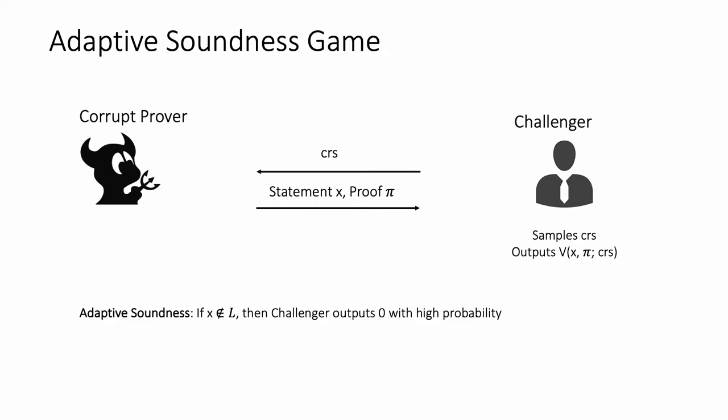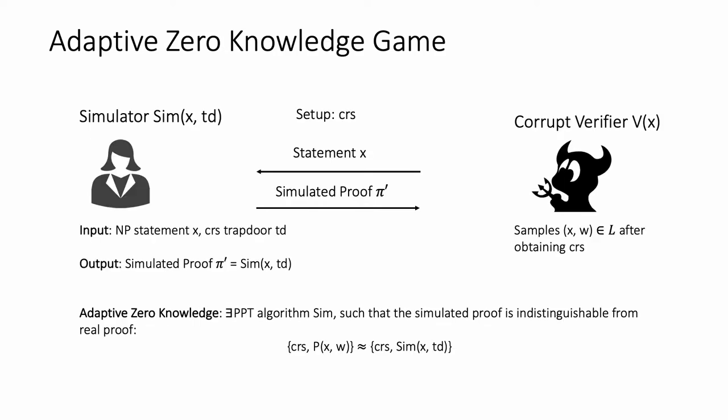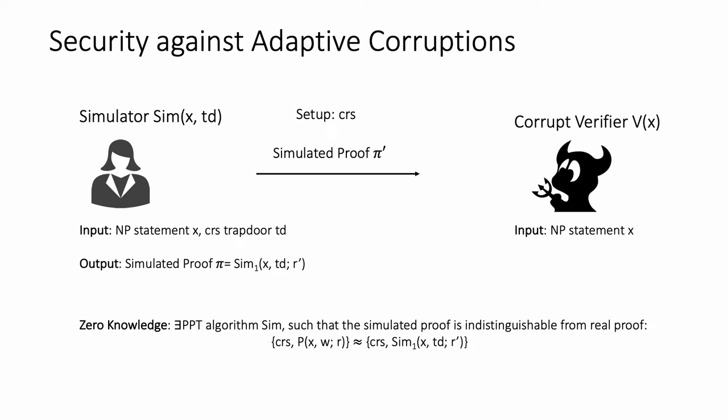That is, a prover cannot break soundness even if the statement is adaptively chosen based on the CRS distribution. We extend the same argument for the zero-knowledge game. Here, a simulator interacts with the corrupt verifier. The corrupt verifier obtains the CRS and adaptively chooses statement x, sending it to the simulator. The simulator computes a simulated proof which should be indistinguishable from an honestly generated proof. The verifier can adaptively choose x, which must be in the language. We say a protocol is adaptively zero-knowledge if the simulated proof is indistinguishable from a real proof even if the statement is chosen based on the CRS distribution.